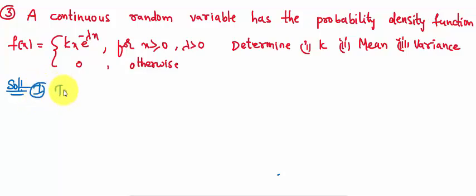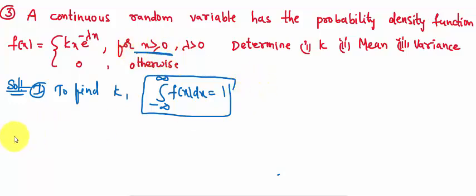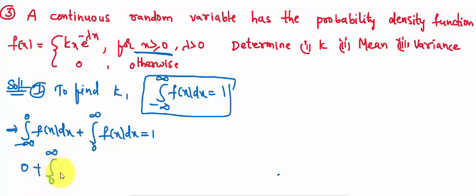To find k, we use the relation: integral from minus infinity to infinity of f(x) dx = 1. The function is defined from 0 to infinity, so the integral from minus infinity to infinity can be split into two integrals: integral from minus infinity to 0 of f(x) dx plus integral from 0 to infinity of f(x) dx = 1. From the probability density function, for x ≥ 0, the function value is kx·e^(-λx), and in other cases it is 0. So the first integral is 0, and we get: integral from 0 to infinity of kx·e^(-λx) dx = 1.